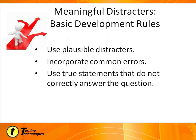Meaningful distractors — just a couple quick rules. Make sure they're plausible. For example, when I talk about the Boston Consulting Group matrix, we have stars, cash cows, dogs, and question marks. If I put 'cats' as an answer choice, students will immediately know it's wrong — that's not a plausible distractor. Make sure answer choices are plausible. Incorporate common errors students make, and use true statements that don't correctly answer the question.